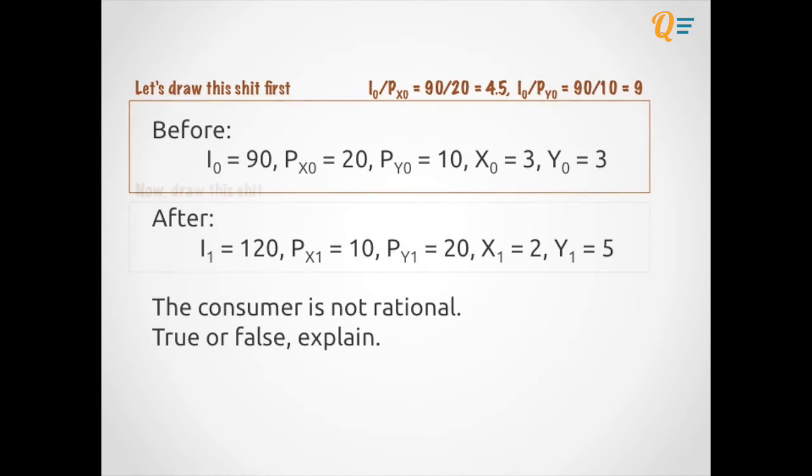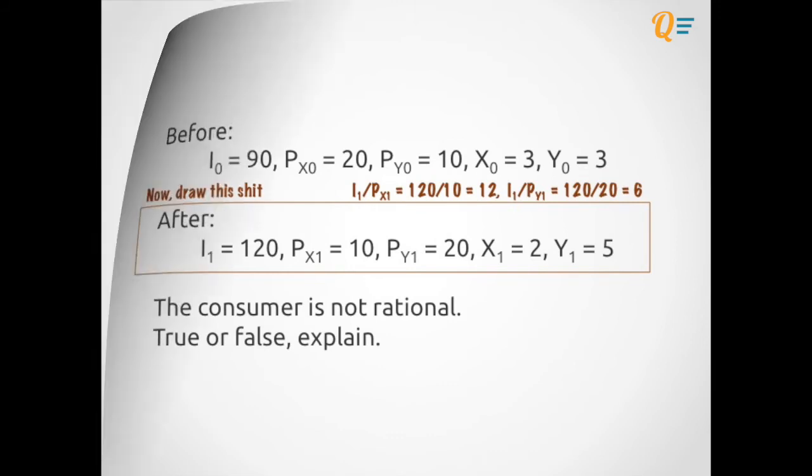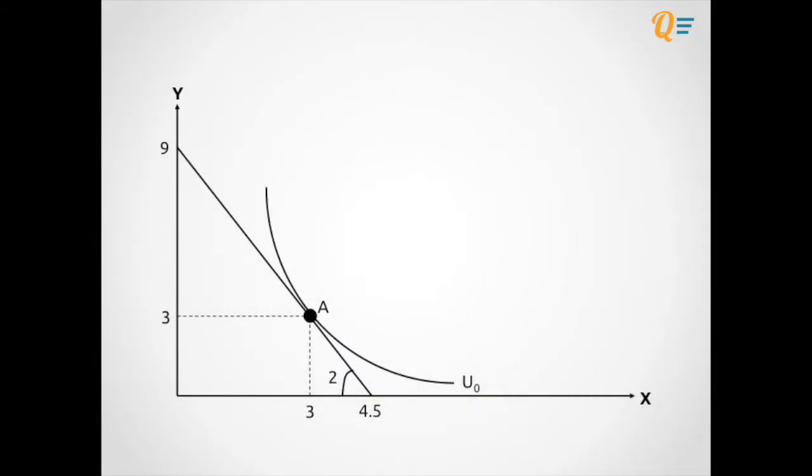Now that we have the before situation sorted out, let's go to the after situation. Let's just do the same thing and look for the vertical and horizontal intercepts. We can see here that it is 12 and 6 respectively for the X and Y axis. Now let's go back to the graph and plot out 6 and 12 on the graph as you can see here in blue. So great, we can now draw our after scenario budget constraint.